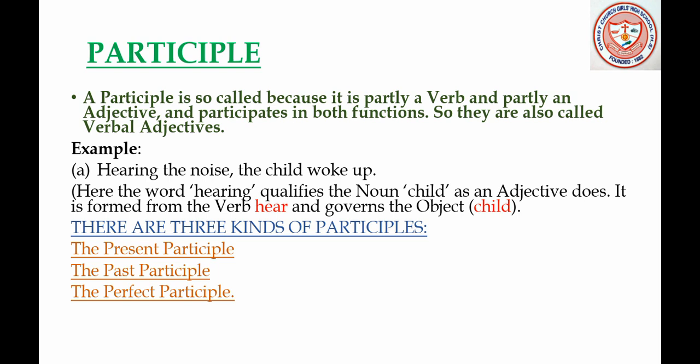Example: 'Hearing the noise, the child woke up.' Here the word 'hearing' qualifies the noun 'child' as an adjective does. It is formed from the verb 'hear' and governs the object. An adjective is a describing word that describes a noun or a pronoun, and in this sentence the word 'hearing' qualifies the noun 'child' just like an adjective.